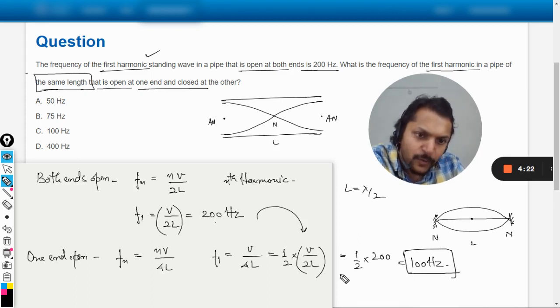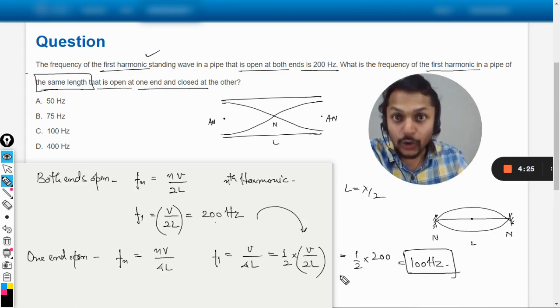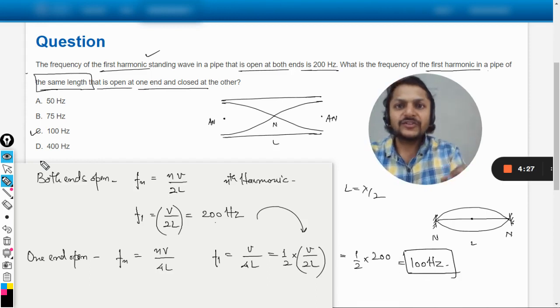So this thing can clearly be substituted here, so your answer will be half into 200, and hence 100 hertz in the case of one end open and one end closed. So that is why the answer will be C.